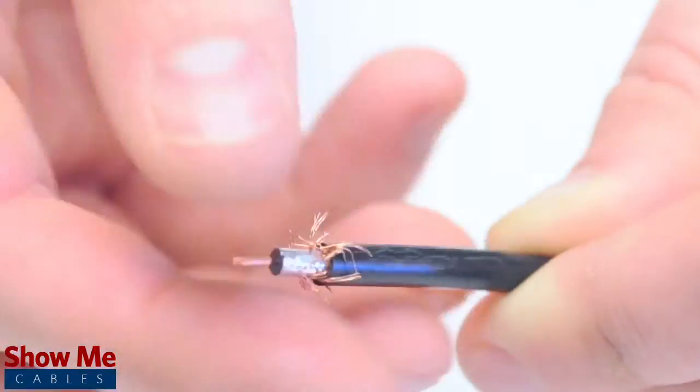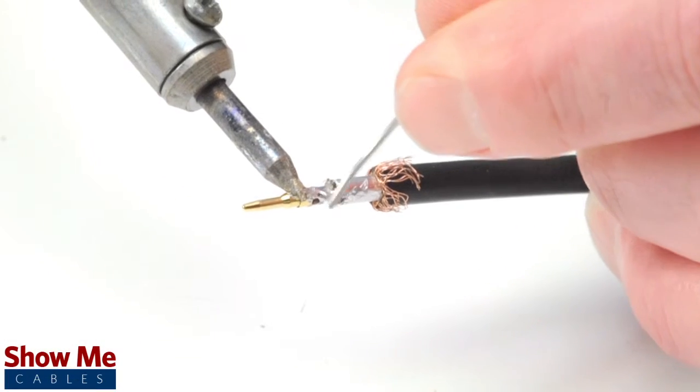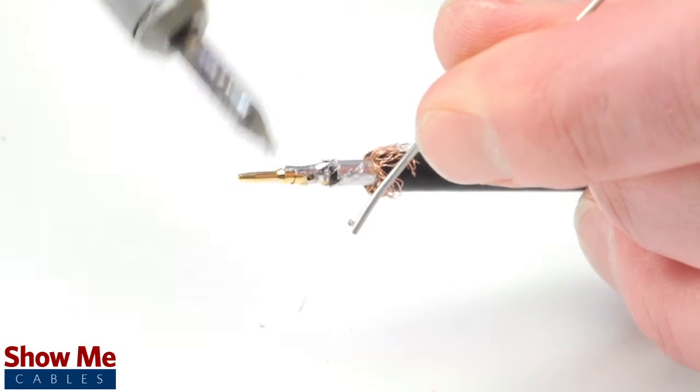Pull back the braided shield and insert the pin onto the center conductor. Solder the pin onto the center conductor and insert the connector housing over the cable.